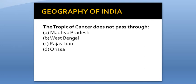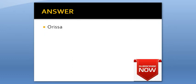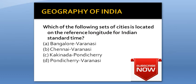The Tropic of Cancer does not pass through: Option A: Madhya Pradesh. Option B: West Bengal. Option C: Rajasthan. Option D: Orissa. Answer is Orissa.